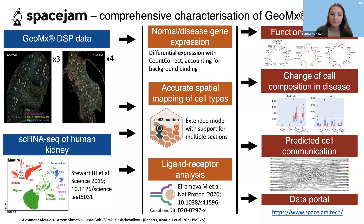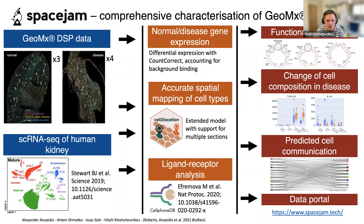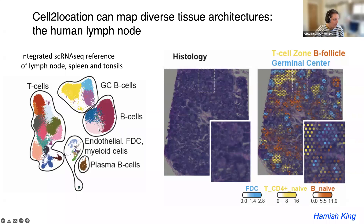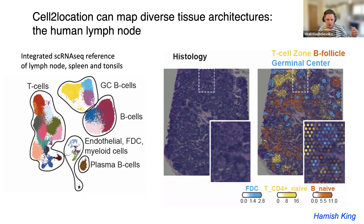The next question: is gene expression variation within a cluster or cell type considered in the cell2location model? The way we address this is through sub-clustering. For example, rather than using one category of B cells, we provide cell2location with several subtypes of germinal center B cells and several subtypes of naive and memory B cells. By providing expression signatures of subtypes, you can map subtypes and thus capture intra-cluster heterogeneity.